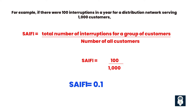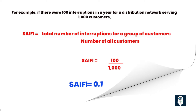SAIFI is calculated by dividing the total number of customer interruptions by the total number of customers served. For example, if there were 100 interruptions in a year for a distribution network serving 1000 customers, the SAIFI would be 0.1 interruptions per customer per year — 100 divided by 1000 equals 0.1.